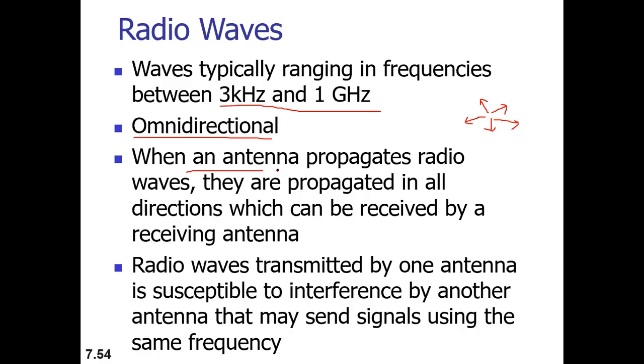When an antenna propagates radio waves, they're basically propagated in all directions and the receiving antenna can be anywhere. This omnidirectional property is advantageous in the sense that the sending antenna and the receiving antenna can be anywhere. They don't necessarily have to be aligned for the sending and receiving purpose.